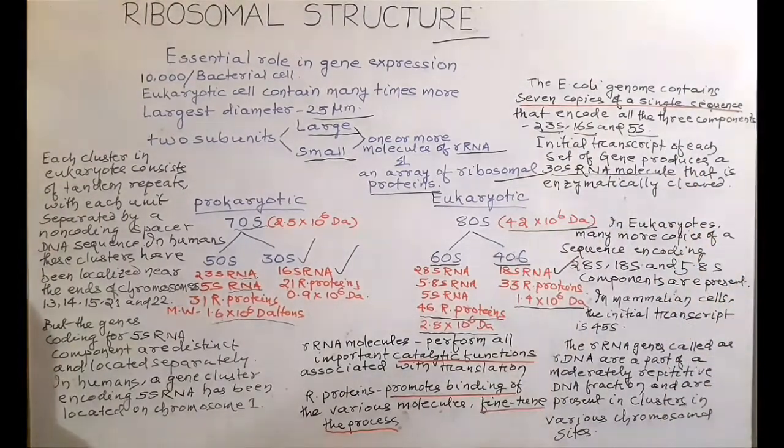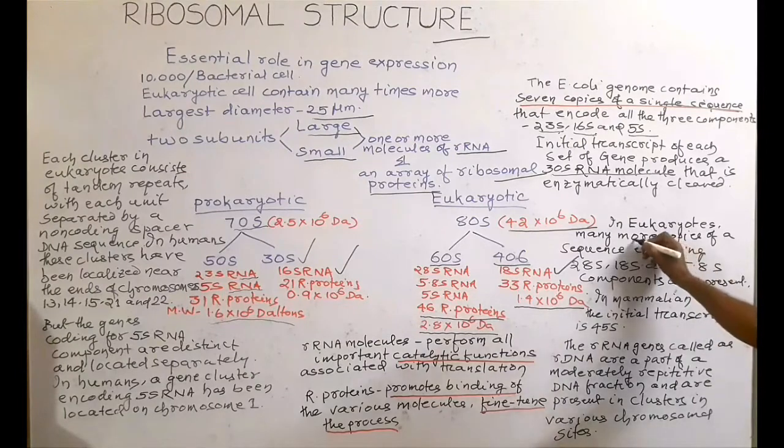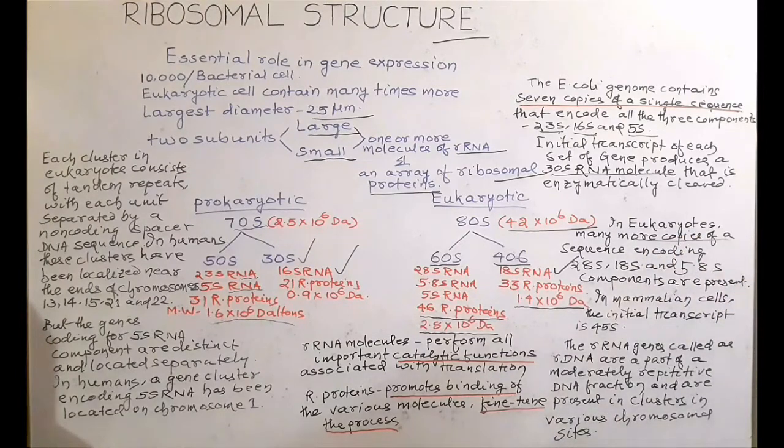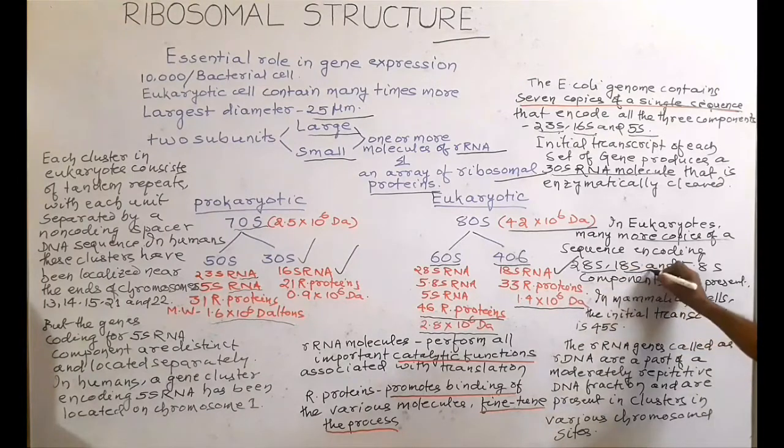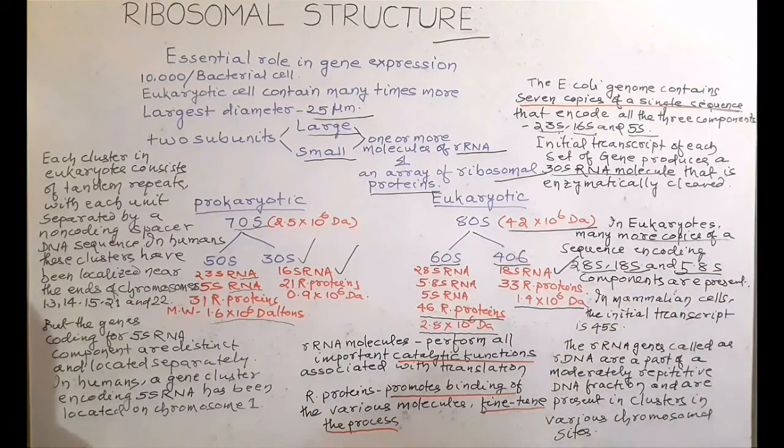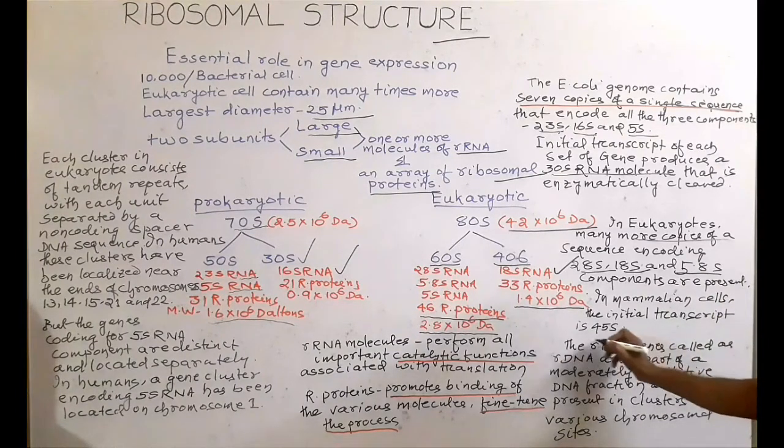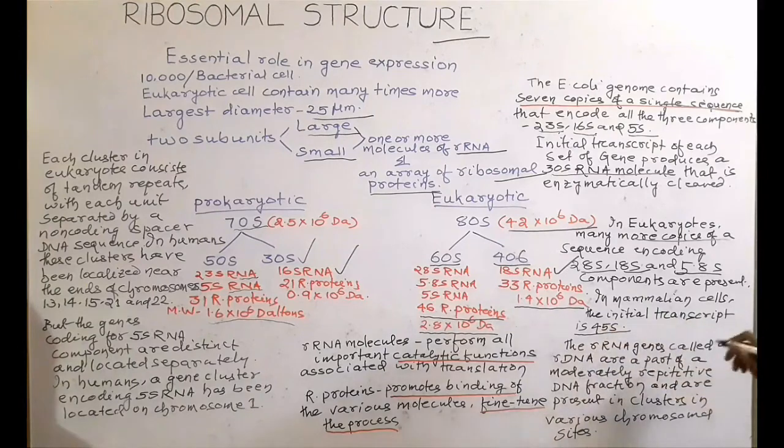In eukaryotes, many more copies of a sequence encoding 28S, 18S, and 5.8S components are present. In mammalian cells, these sets of genes are transcribed to form an initial transcript which is 45S.